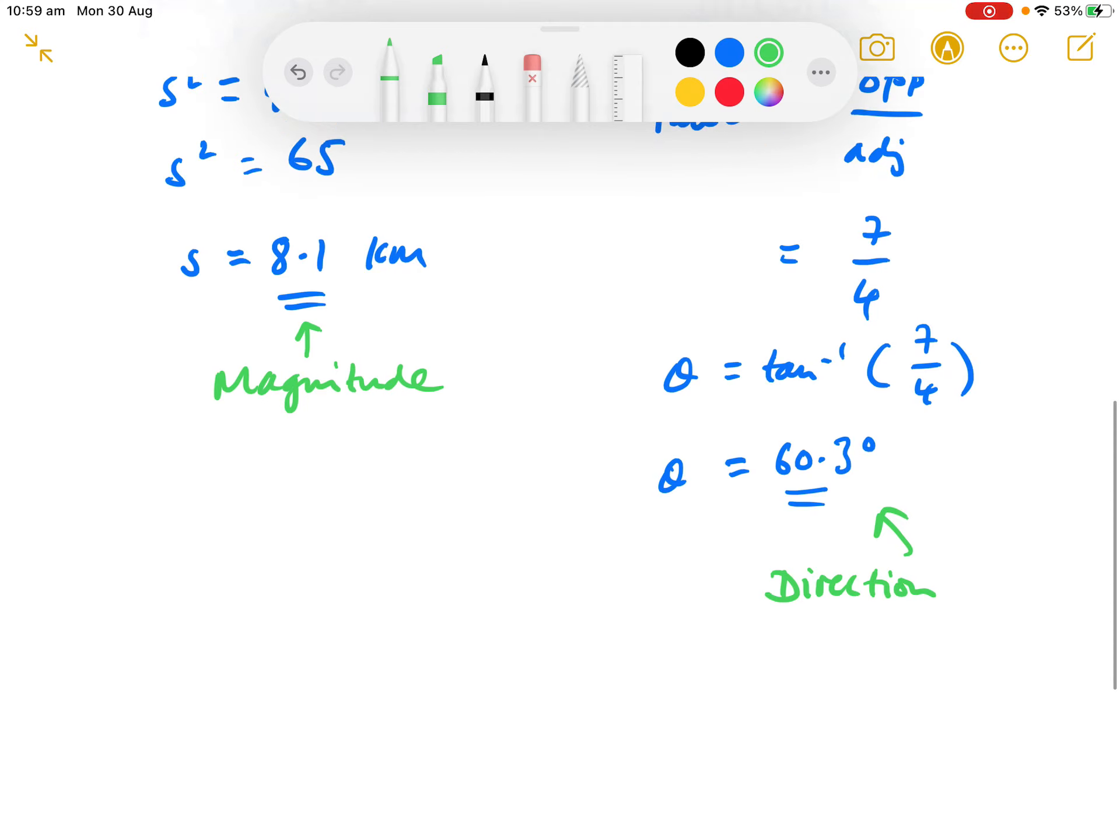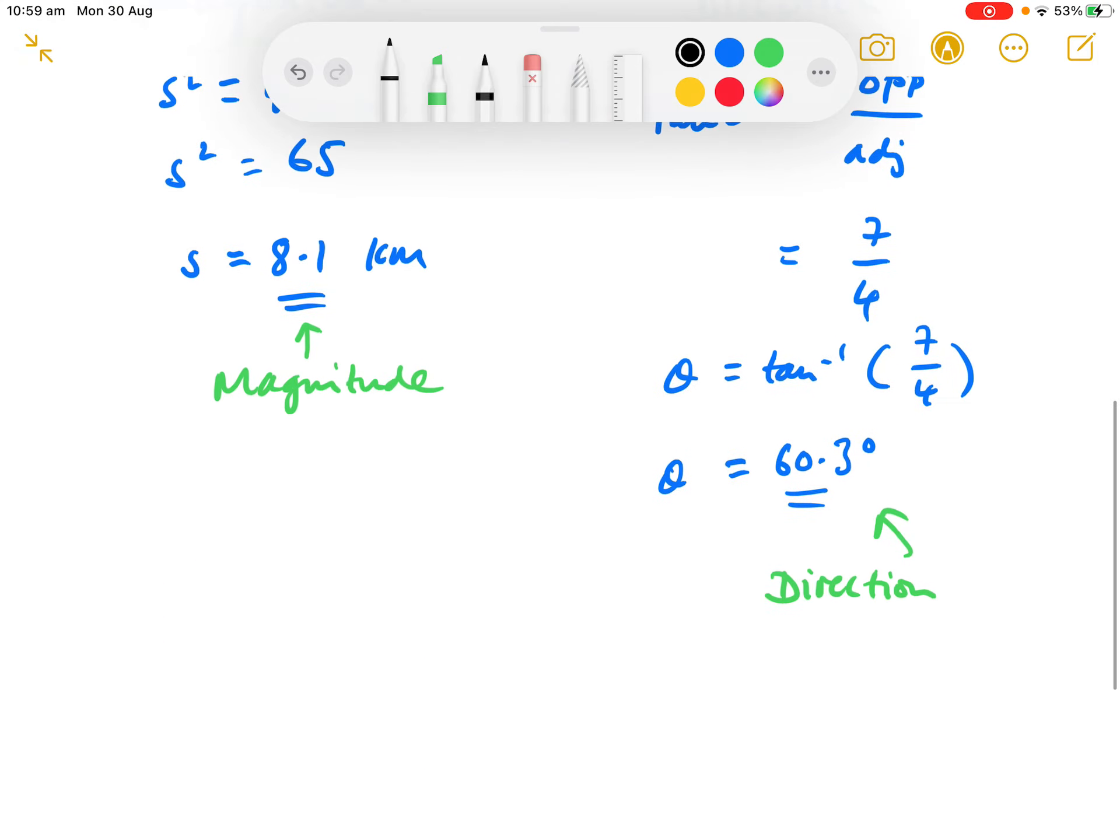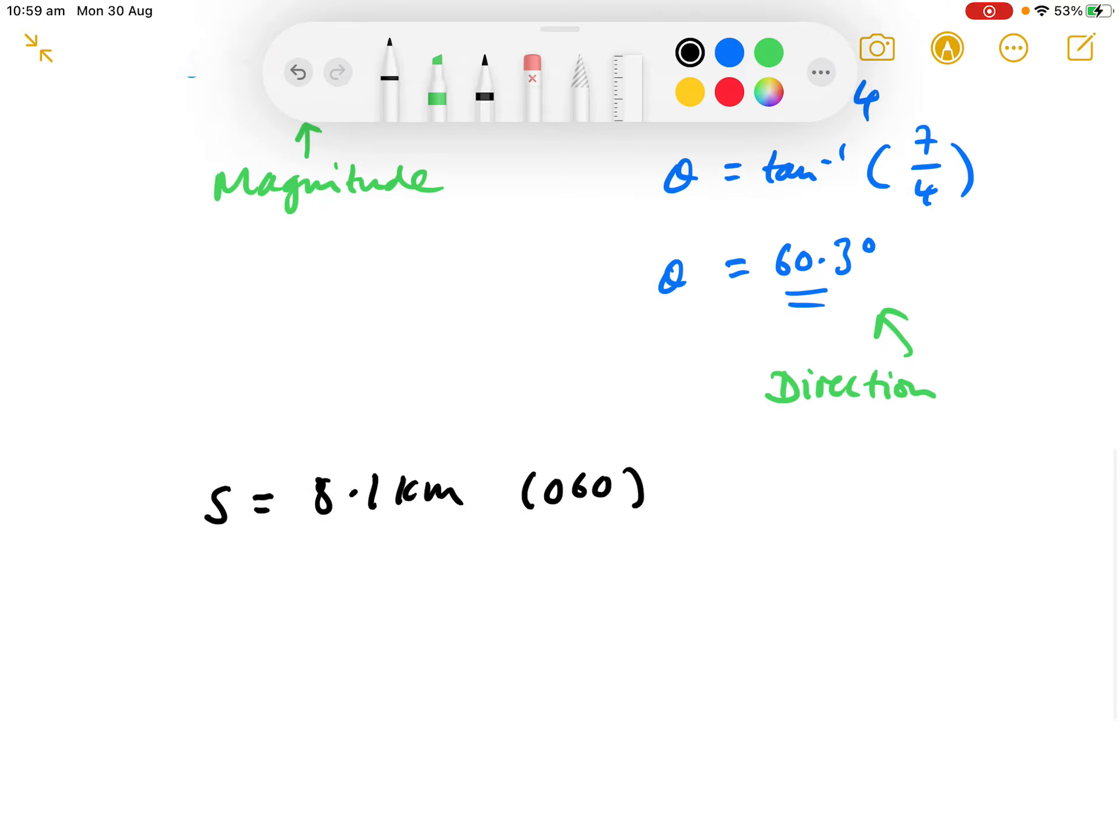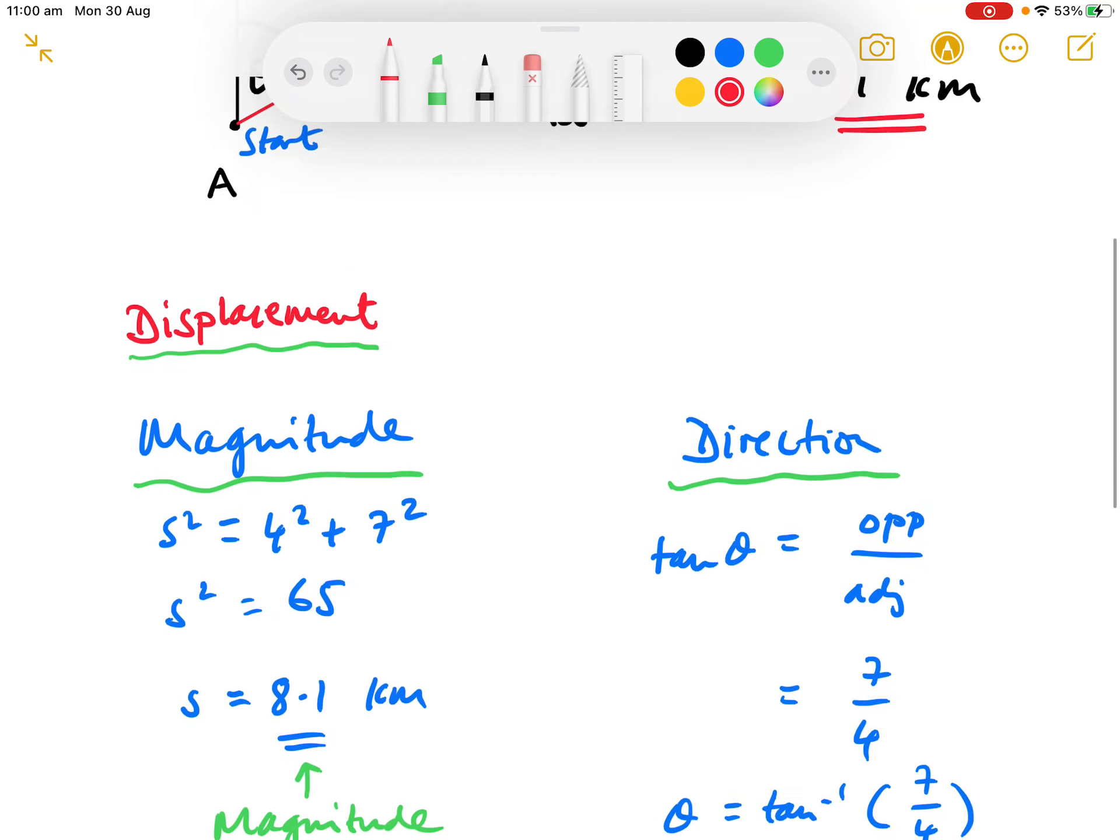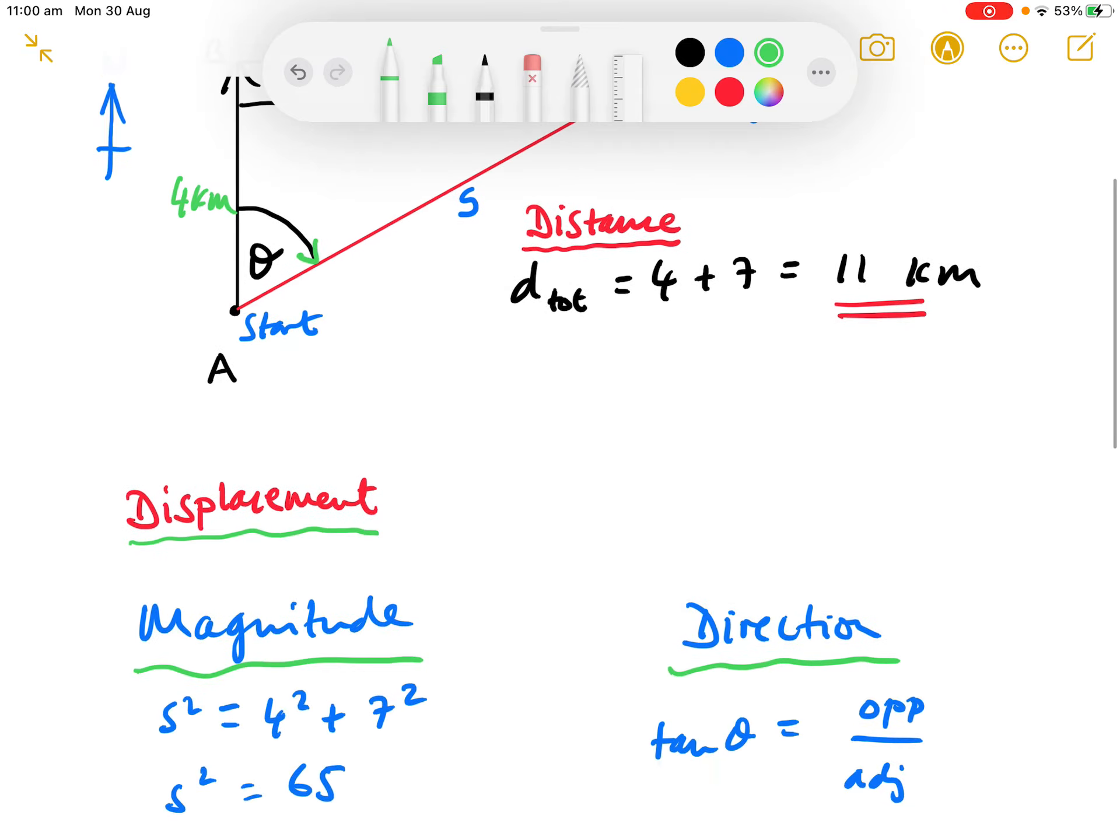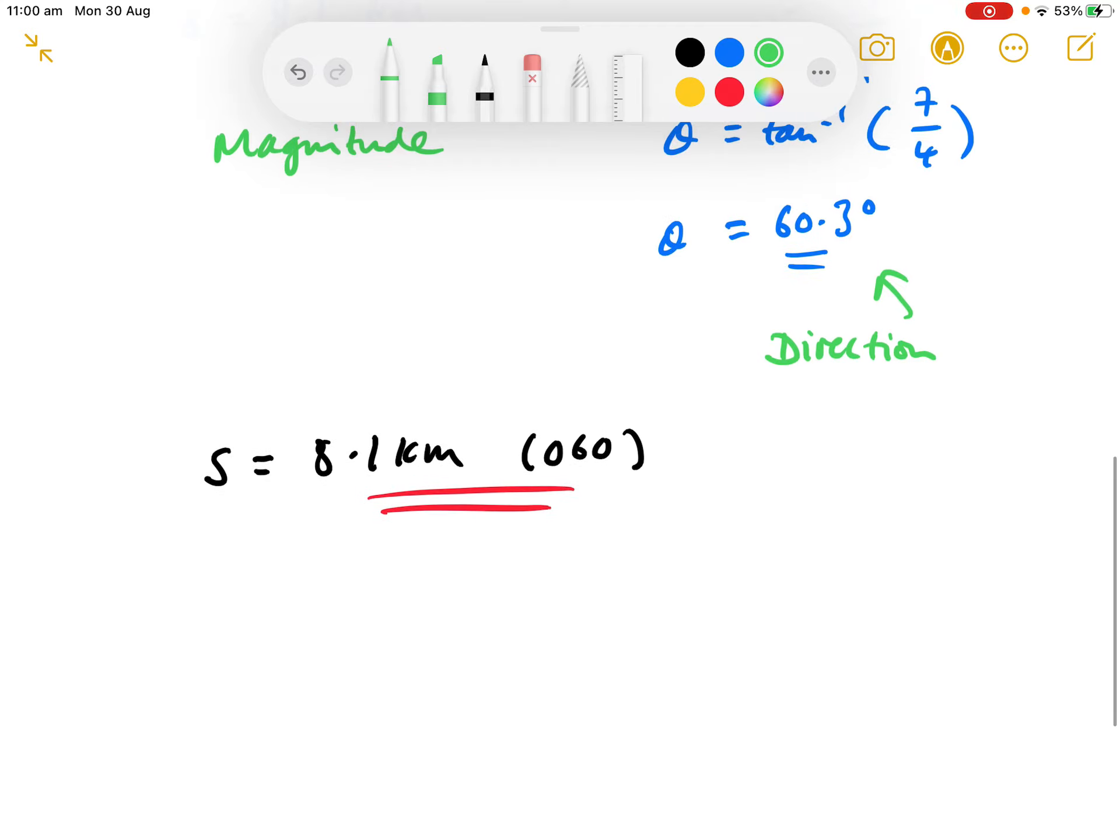How do we quote the final answer? We use a three-figure bearing. We're on the flat surface of the earth here, so we can use a three-figure bearing. We say that the displacement, S, equals 8.1 kilometers at 060 degrees. We don't need to put in the degree sign, just the three-figure bearing in brackets. Remember, a three-figure bearing is the angle measured round from north. In this case, theta is giving us the three-figure bearing directly. That's the difference between distance and displacement.